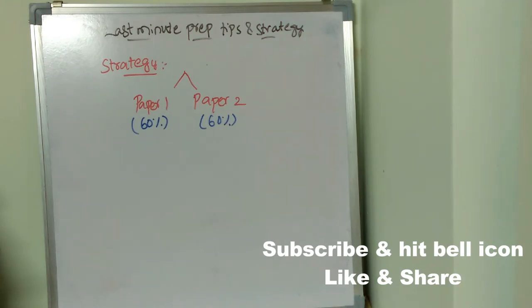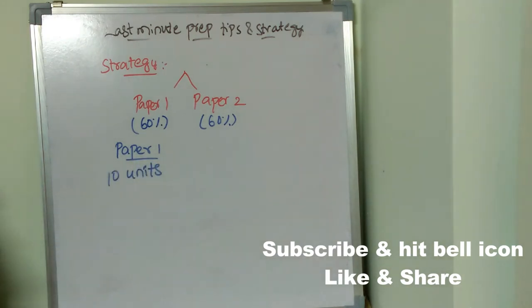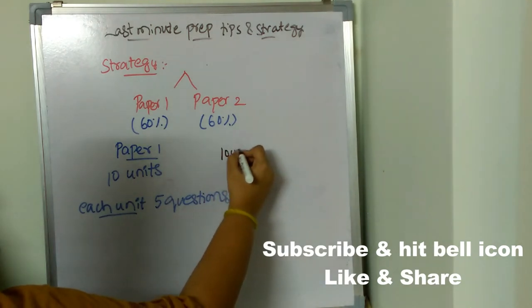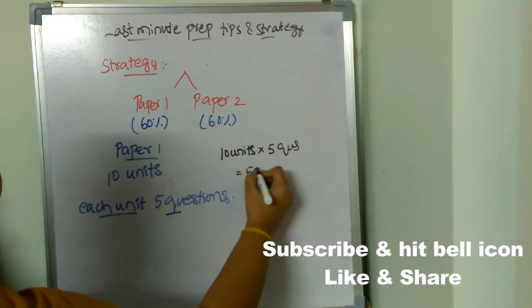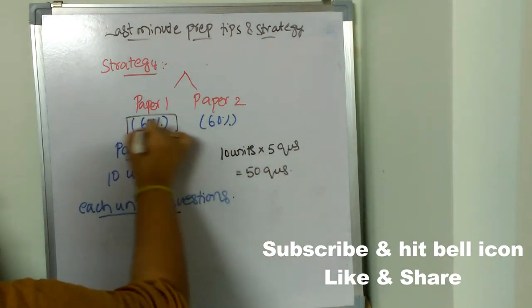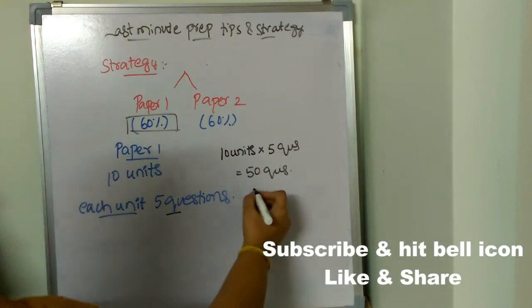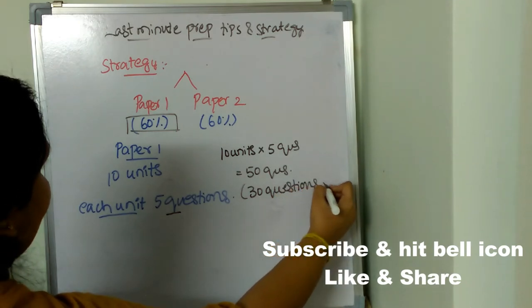I'll tell you how you can get this 60 percent very easily without much effort. Coming to Paper 1, there are 10 units and from each unit five questions will be asked — 10 units, five questions from each unit — so totally 50 questions. Our target is 60 percent, so out of 50 questions you must at least answer 30 questions correctly.